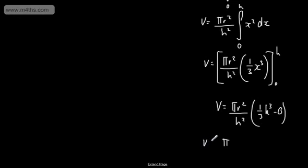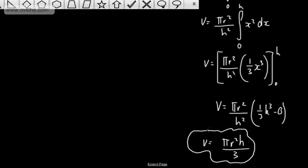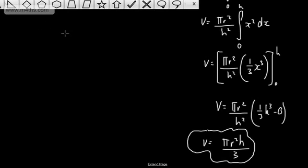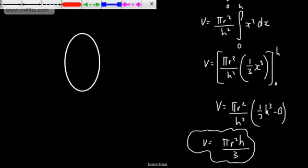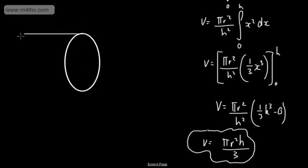So if we now simplify this, the volume is going to be π r squared. Now, consider h squared and h cubed. That's going to cancel to give me h, and then over 3. Now, you might recognize this. The volume is π r squared height divided by 3, or 1/3 π r squared height. If you go back lower down the school, you will have done the volume of the cone.